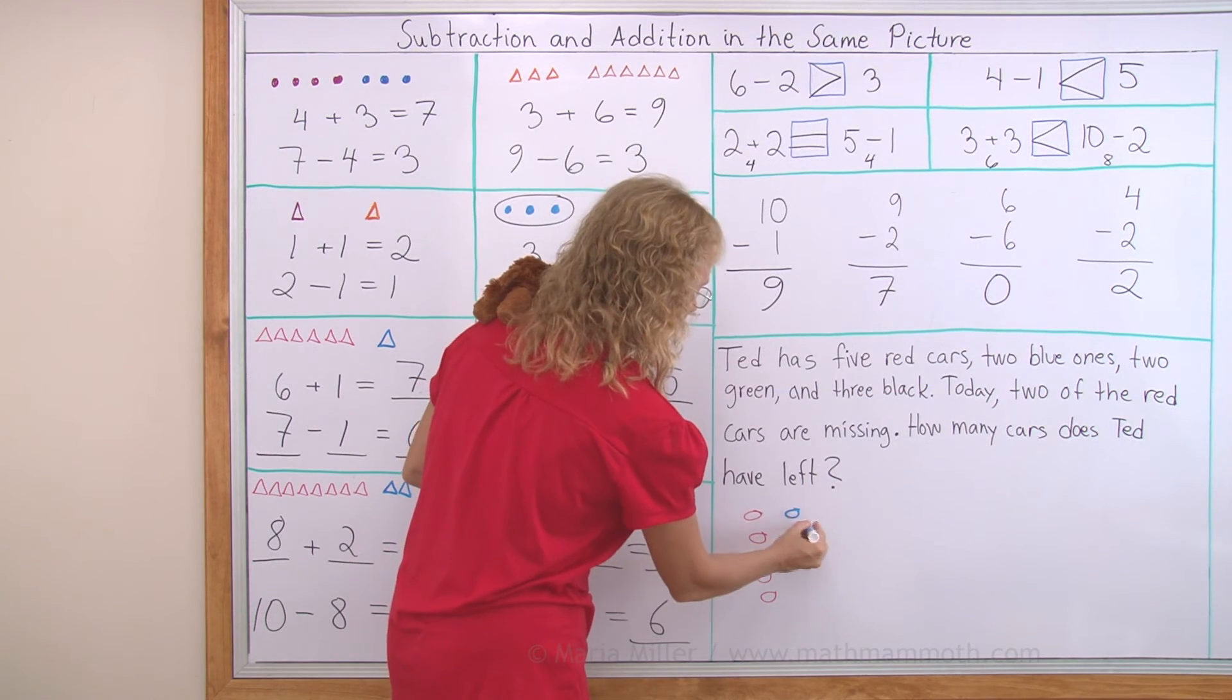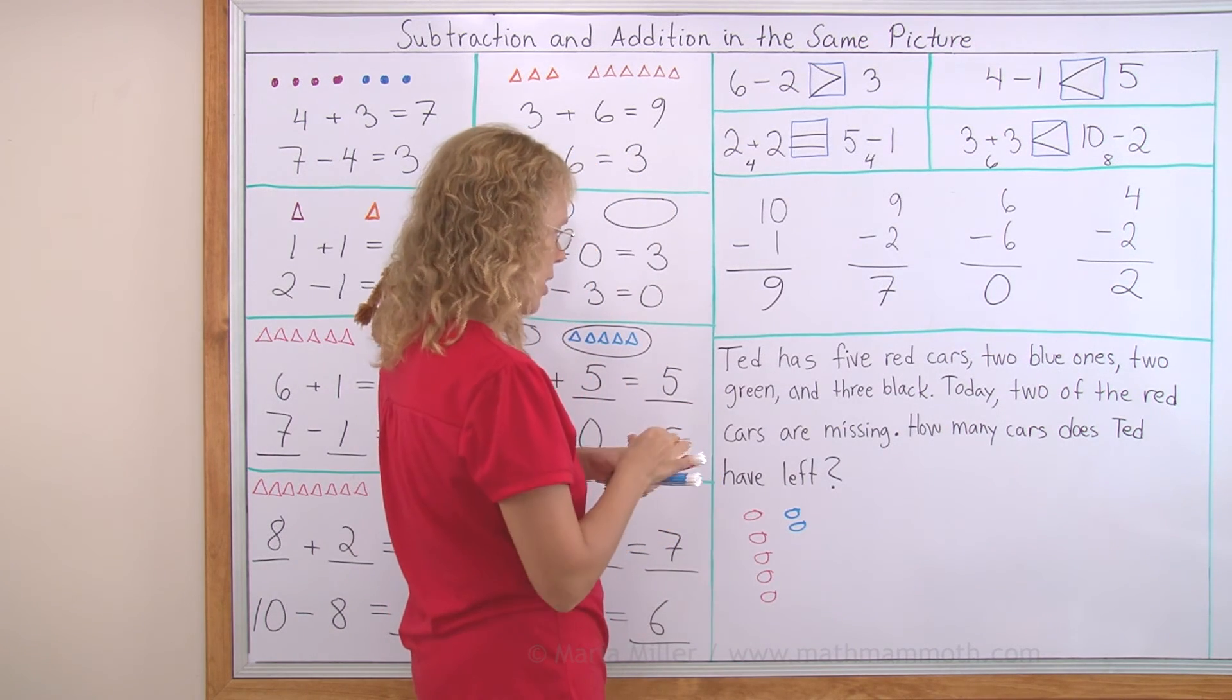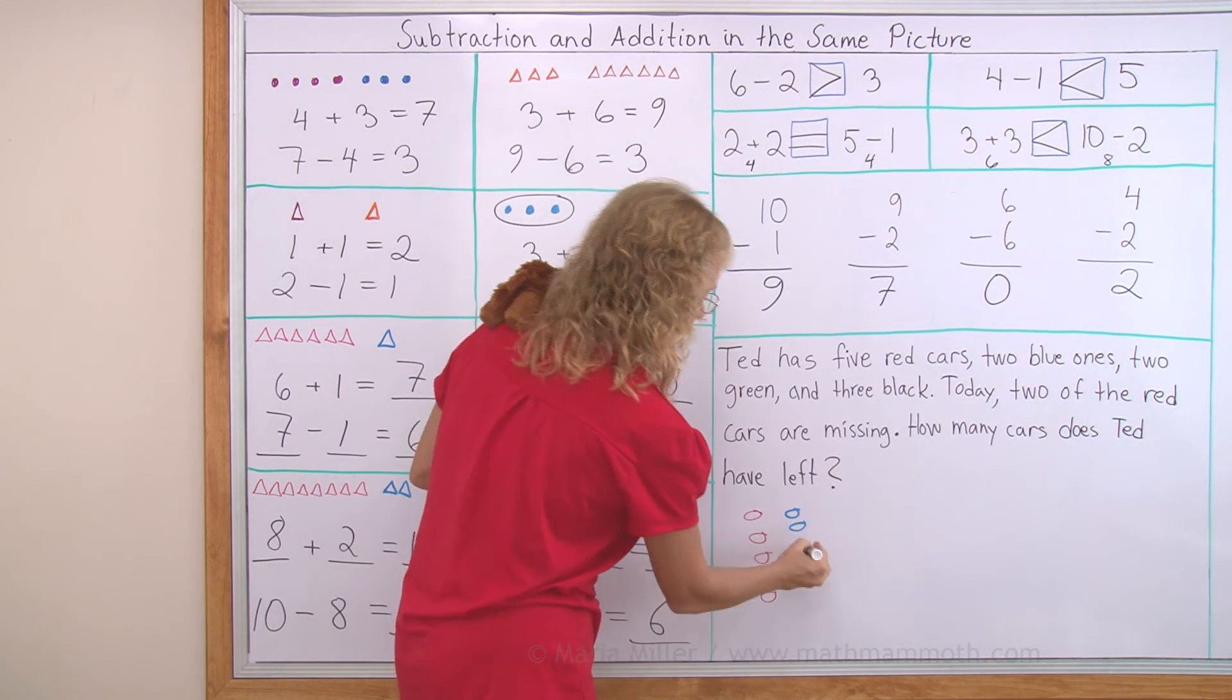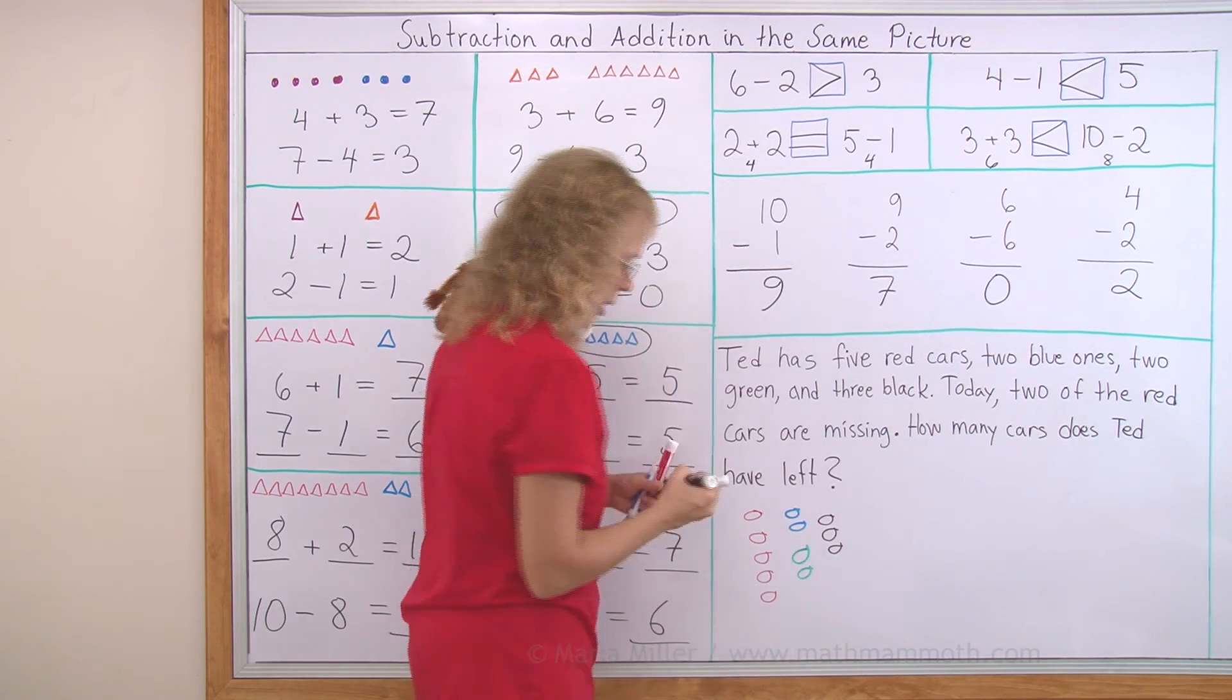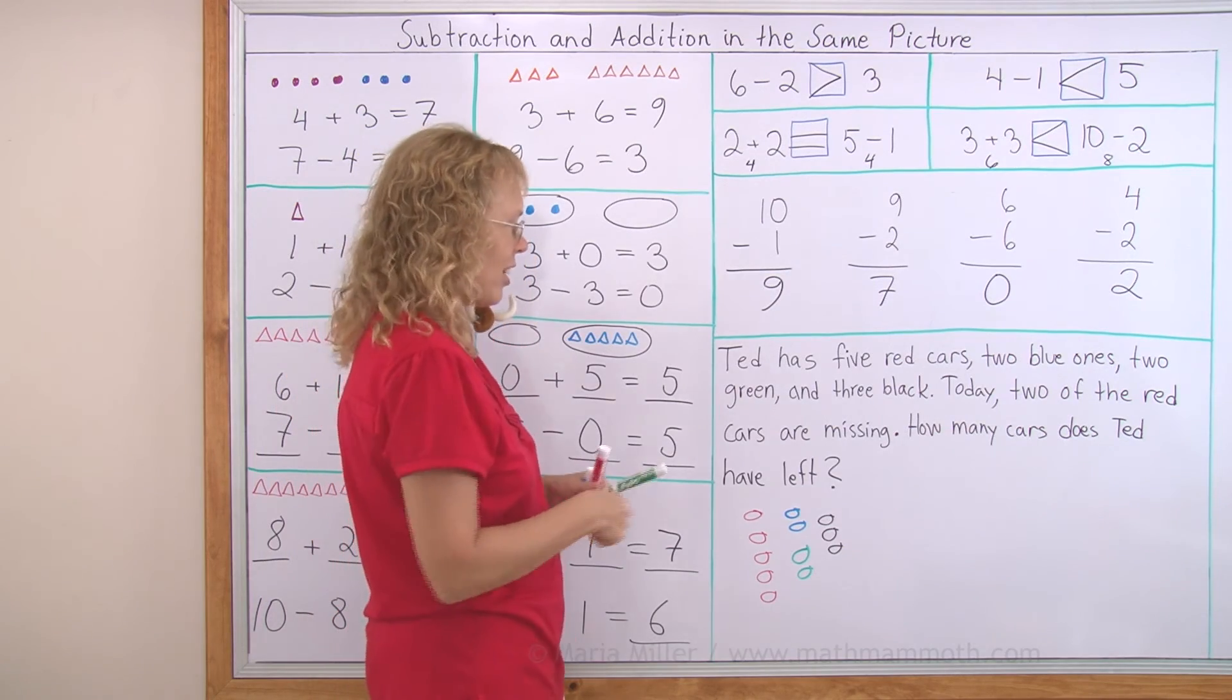Two blue ones. And two green ones. And three black ones. These are Ted's cars. Okay, now let's go on.